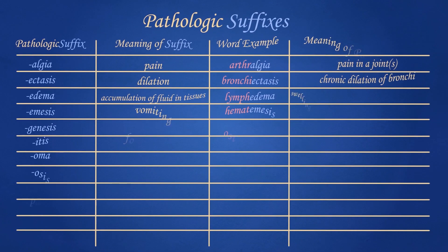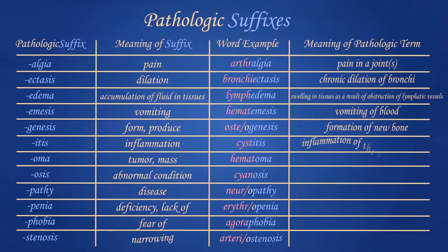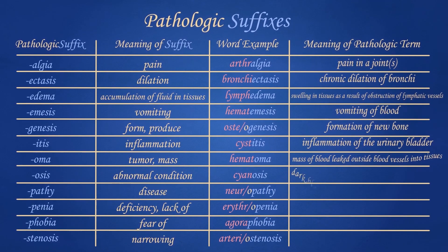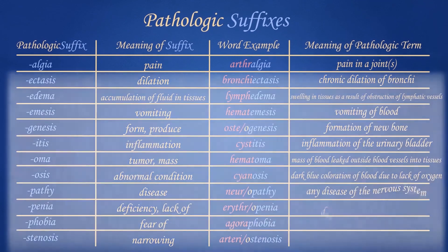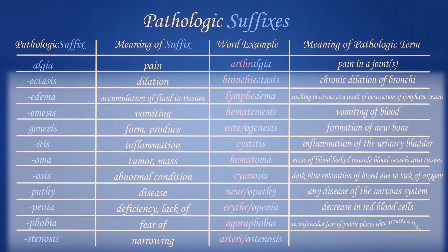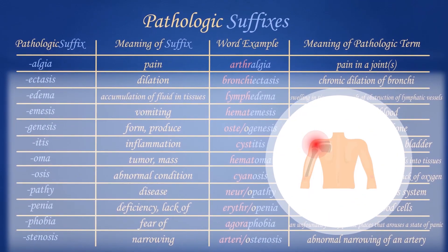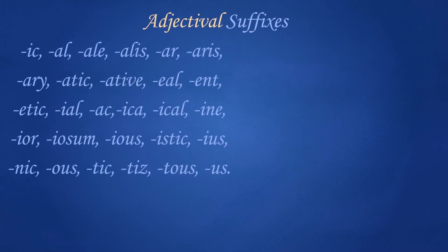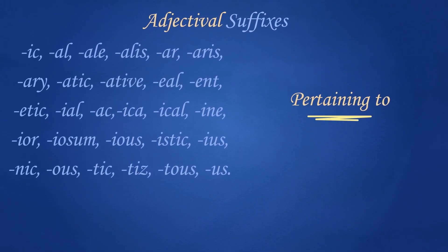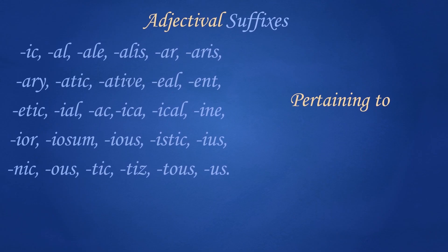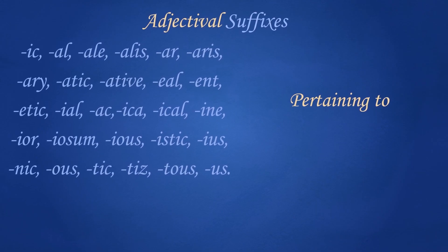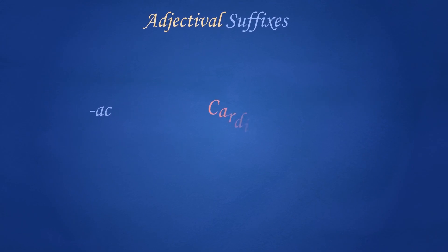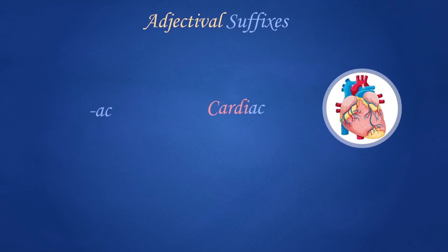For the pathologic suffixes, when added to a root or combining form, this type of suffix produces a medical term that describes a symptom or sign of a disease process. For example, the term 'arthralgia' — the suffix '-algia' means 'pain', and the term means 'pain in a joint or joints'. For the adjectival suffixes, there are 28 suffixes that mean 'pertaining to'. These suffixes are used as adjectives to describe the root — an example is the suffix '-ac', as in the term 'cardiac', which means 'pertaining to the heart'.